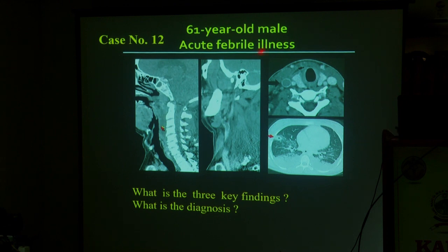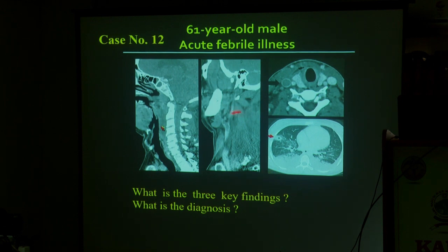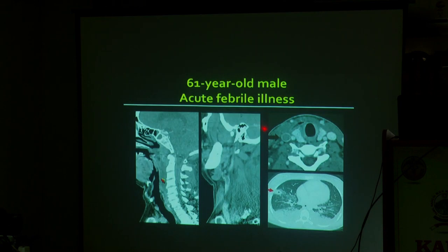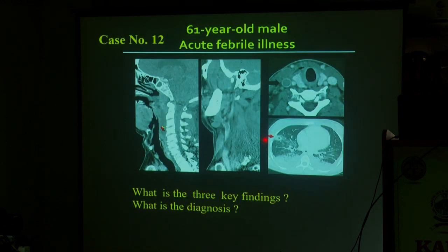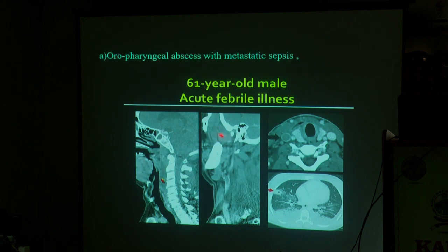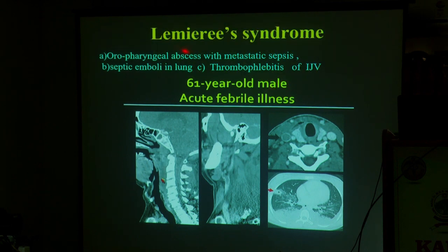Case twelve: 61-year-old male with acute febrile illness. What are the three key findings? They are given apart from the head and neck — going slightly lower down as well. Three components: there is phlebitis, septic emboli, and infection. It is an oropharyngeal abscess with metastatic abscesses and septic emboli with thrombophlebitis of the IJV. It is Lemierre's syndrome.